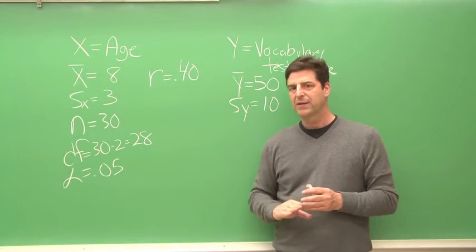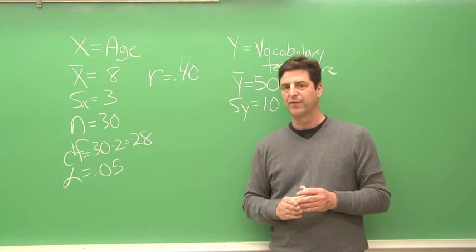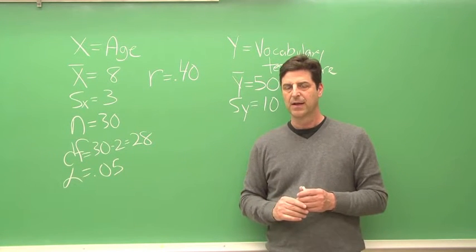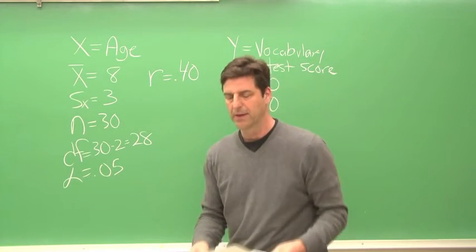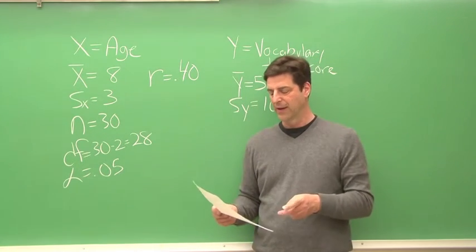So with 28 degrees of freedom, an alpha level of .05, and a two-tailed test, we can use Appendix B, right here, to figure out what is our critical t-value.